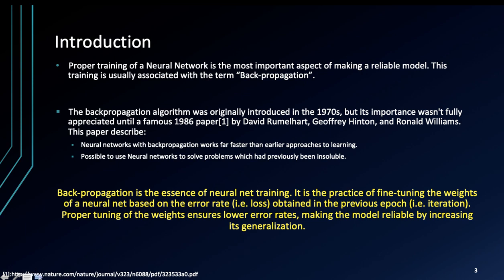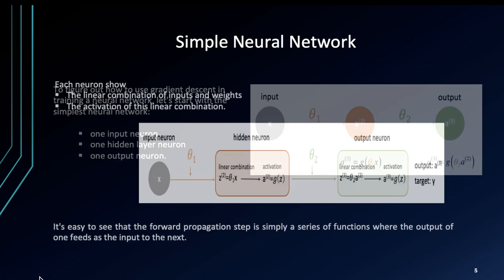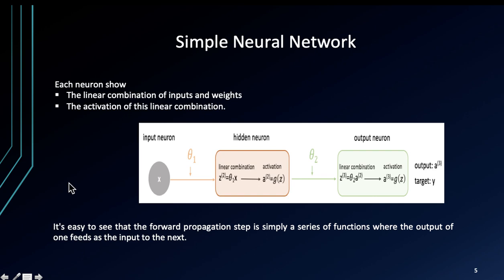This is a simple neural network. We have one input neuron, one hidden layer neuron which is here, and one output neuron. Basically, with each neuron we have a linear combination of inputs and weights, and that's something you already saw. This is the input neuron, and we combine the random weights with the inputs.